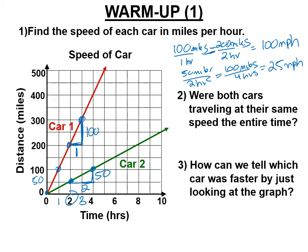Were both cars traveling at the same speed the entire time? Yes — we know that because it's a perfectly straight line. How can we tell which car was faster by just looking at the graph? The one that's pointing more up toward the ceiling has a higher rate, a higher speed. So car 1, without even calculating anything, since the red ray is pointing more straight up, the speed was higher.